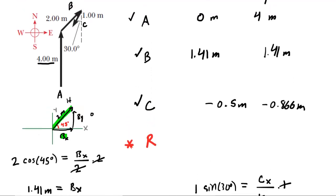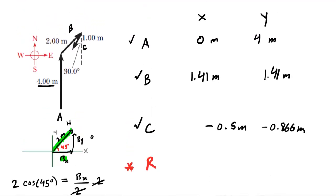We now have all the X and Y components for our three vectors. To get the resultant, we add the X components together and add the Y components together — essentially adding vertically down through the table. For the X component, adding all values gives approximately positive 0.91 meters. For the Y component, adding all values vertically gives approximately 4.54 meters.